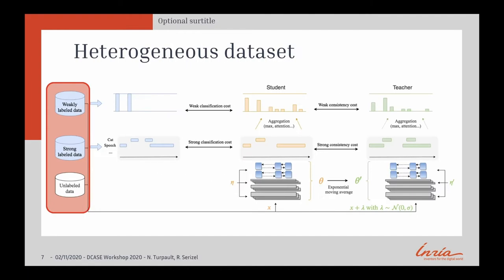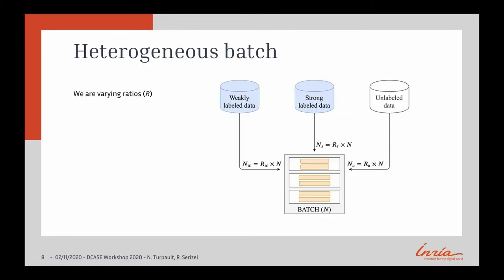Let's begin with the heterogeneous dataset. What we want to know is how we combine them and how it helps training. Since we have three sets, we combine them in each batch so that each batch contains data from each set. We choose the number depending on a ratio of how much we want weakly labeled data, strongly labeled data, or unlabeled data. In the experiments, we vary this ratio Rs, Ru, and Rw.